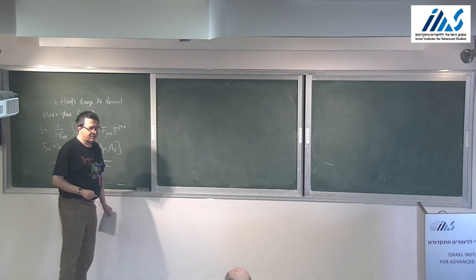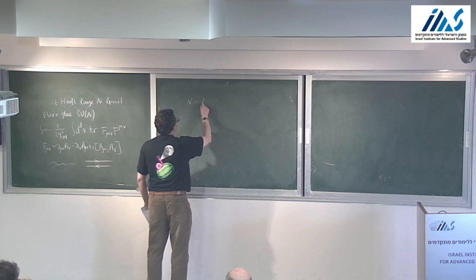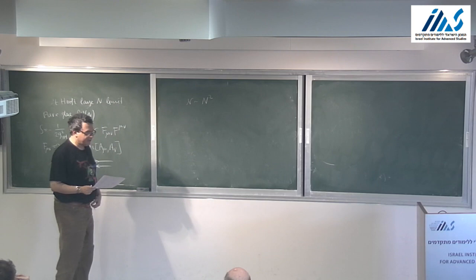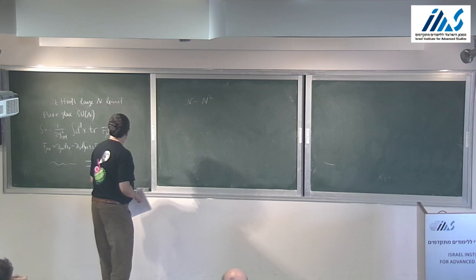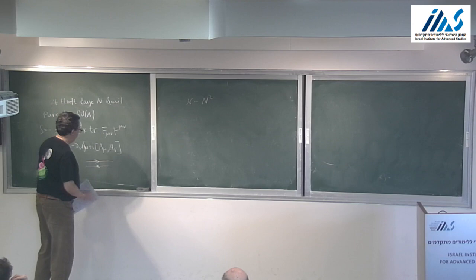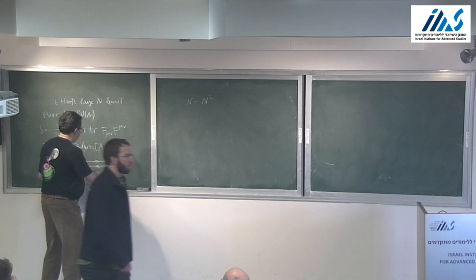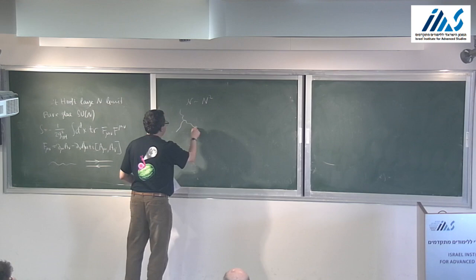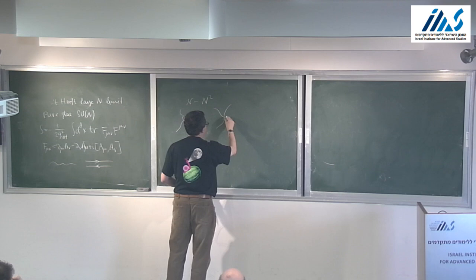In the language used yesterday, this is the case where the number of degrees of freedom scales as N², or more precisely N²−1, which is not important in the large-N limit. There is another rescaling choice where you rescale A by a factor of g_{YM}, and then the triple gluon vertex carries a factor of g_{YM}, and the quartic vertex carries g_{YM}².